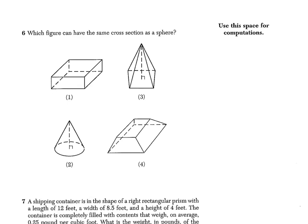Question 6 says, which figures can have the same cross-section as a sphere? And if we think about a sphere, it's like a basketball. A cross-section means if we were to slice through it with a knife and cut out a thin piece of it, what shape would it be? And if we look at a sphere, a basketball, if I cut through a basketball or even an orange, I would get a cross-section of a circle.